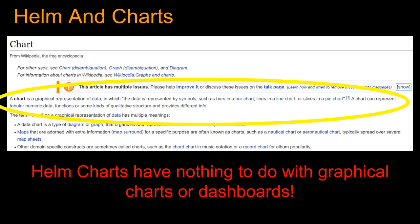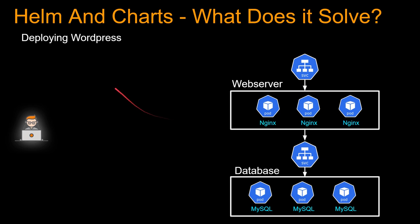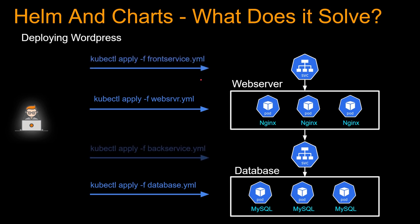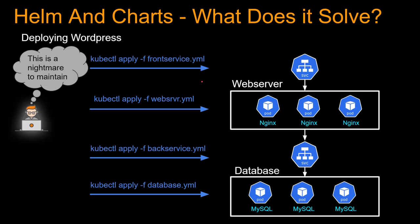Let's understand what Helm really is by looking at what problem it solves. Say you have to deploy a WordPress application. You'll have a web server and a database server — maybe you're running Nginx in three pods for high availability, and MySQL in three different pods. You'd have a service in front of the database and one in front of the web server. In Kubernetes, you'd end up with separate manifest files: web-server.yaml, database.yaml, front-end service, back-end service, and so on.